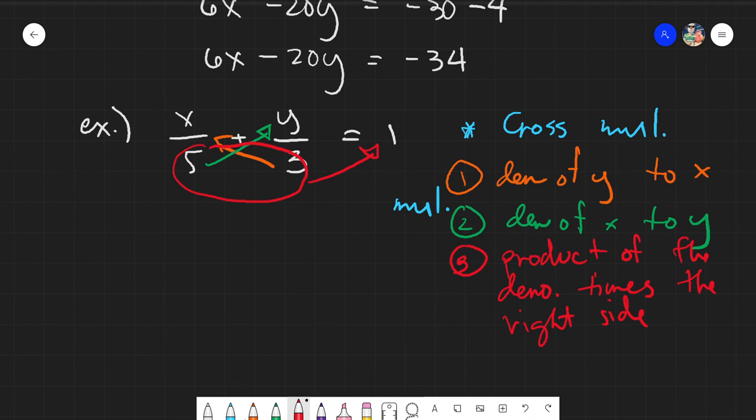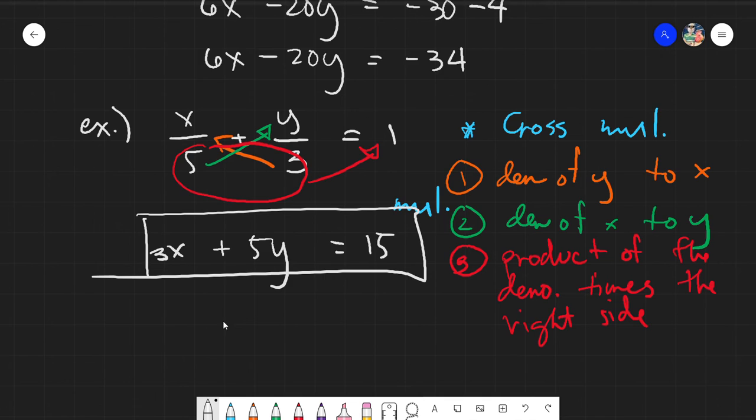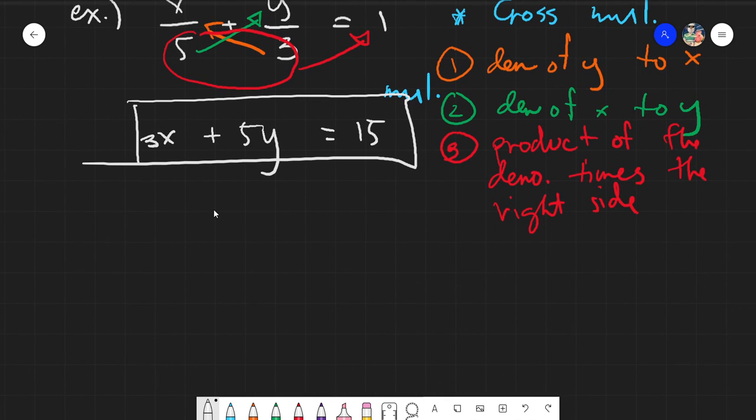So what would happen here if we will try to apply the rules? So 3 times x is 3x. 5 times y, plus, so it's always plus. 5y is equals to 5 times 3 is 15 times 1, it's 15 still. And this would be your standard form already. It's quite easy, right? Actually, for me, this is easier.